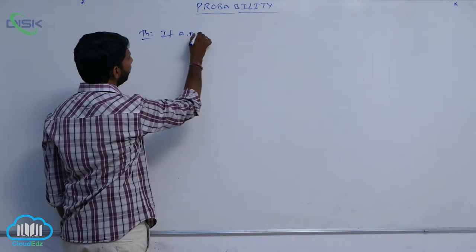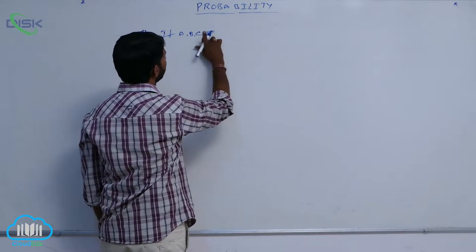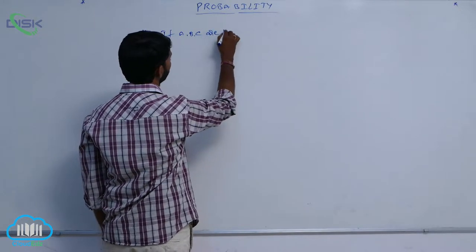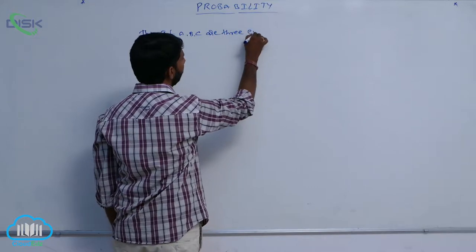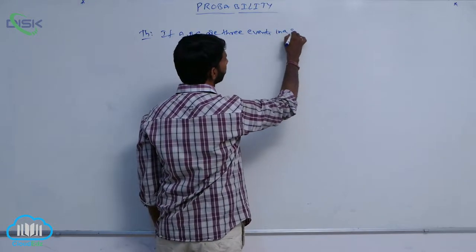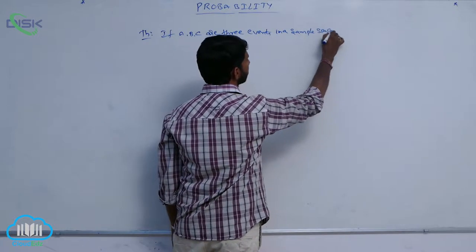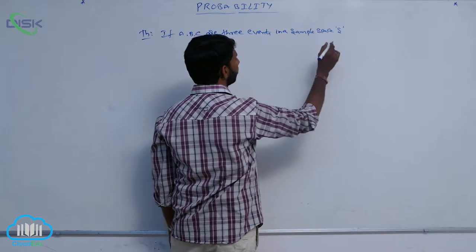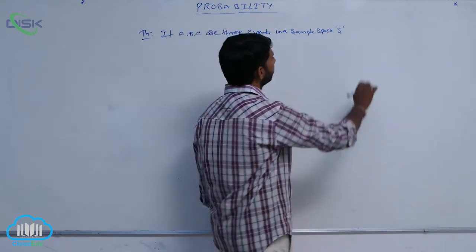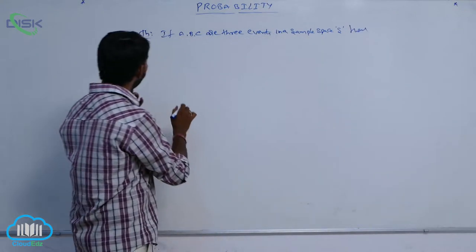If A, B, C are 3 events in a sample space, then P of A union B union C...